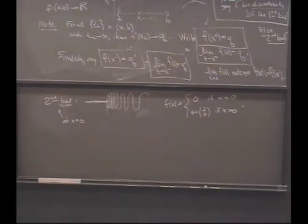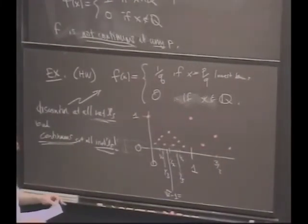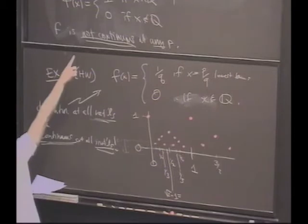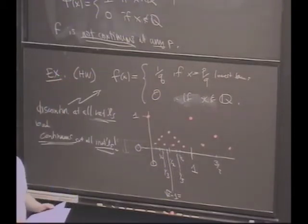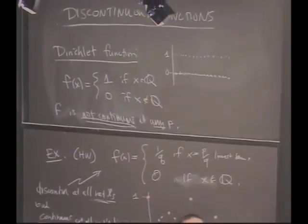So let's come back to these examples here. For the Dirichlet function, what kind of discontinuities do we have? In this picture. Discontinuities of the second kind. You guys are giving me the peace symbol. Peace.